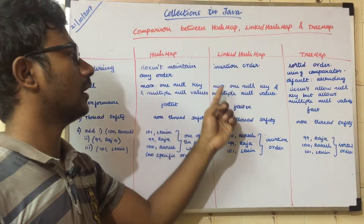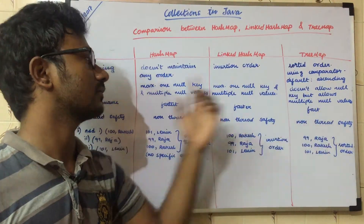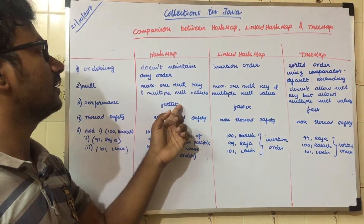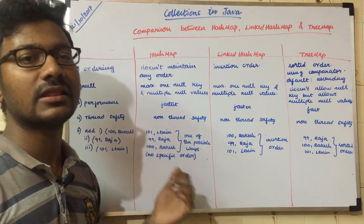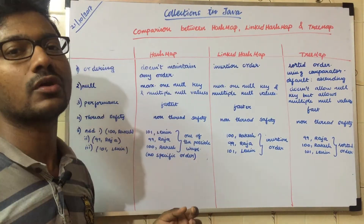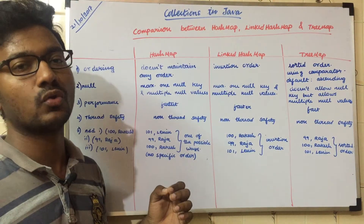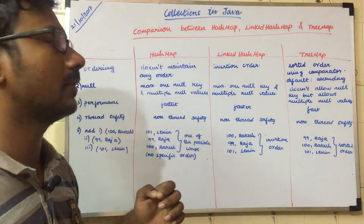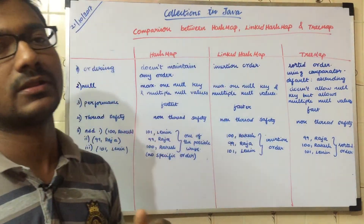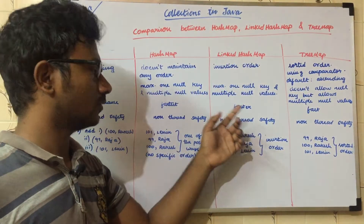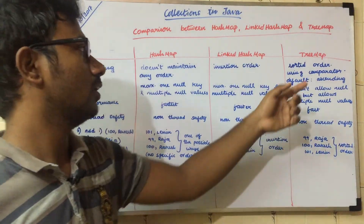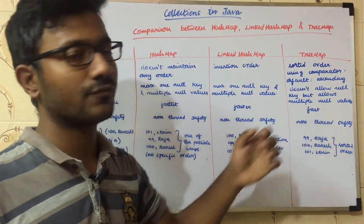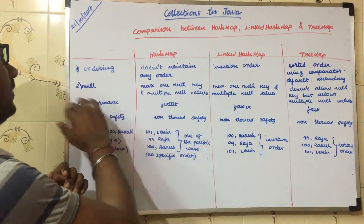The performance: HashMap is the fastest. LinkedHashMap is also fast, but slightly slower than HashMap because it maintains insertion order. TreeMap is slower compared to the others because it maintains sorted order.